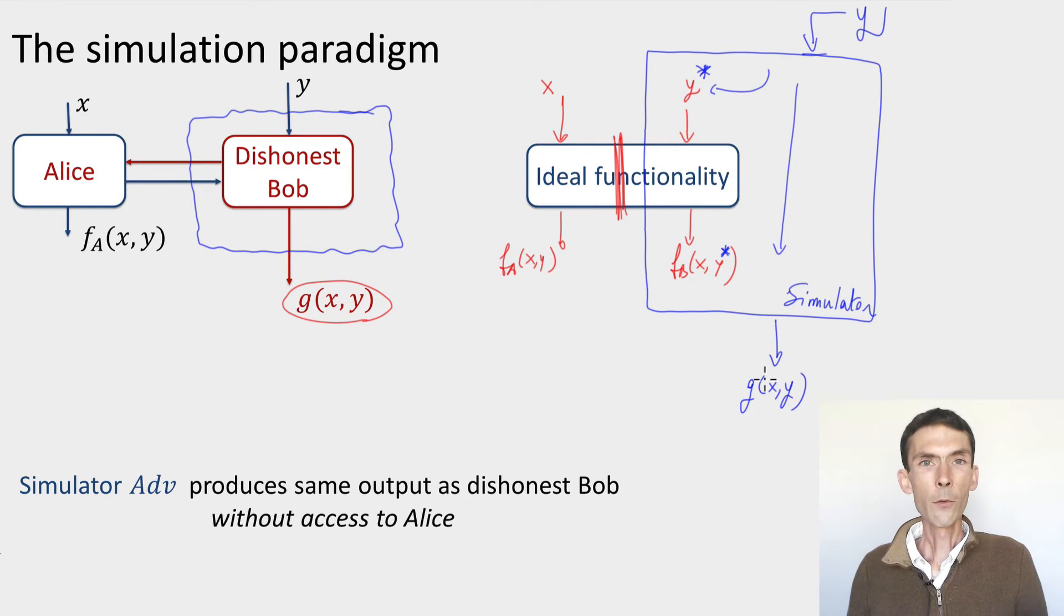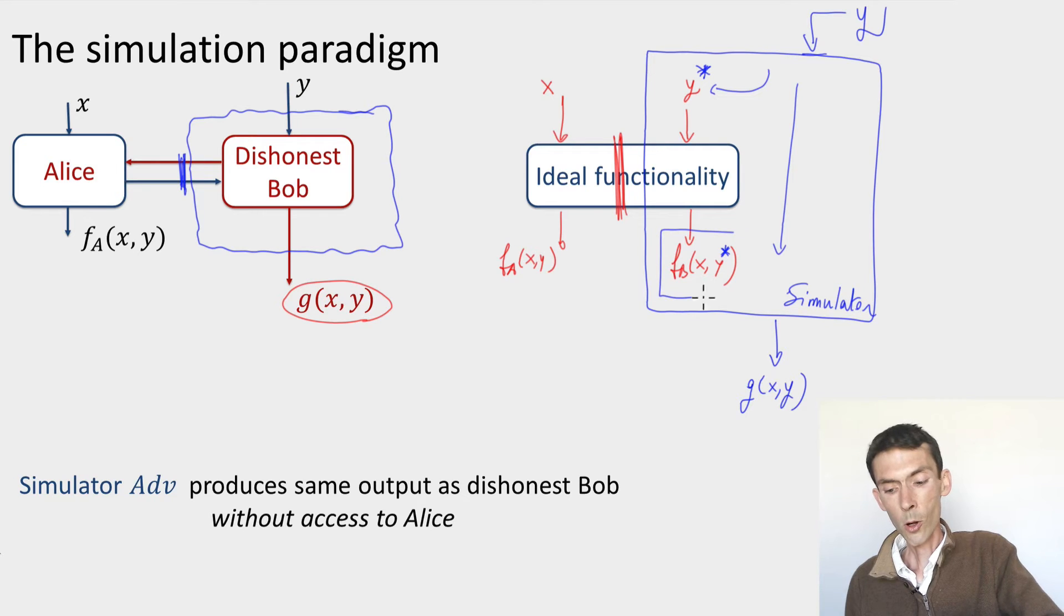Now, if we're able to show that for any dishonest Bob in our protocol, there exists a simulator that interacts with the ideal functionality, and in doing so, produces the exact same result as the dishonest Bob, then we'll say that the protocol is secure against the dishonest Bob. Because Bob could not possibly have learned anything from his interaction with Alice in the real protocol other than the output, because for the simulator, the ideal functionality is giving over to Bob is the ability to compute this output FB of X, Y star. So the only thing Bob can do is lie about his input, which is something that we'll never be able to prevent anyways. So that's the notion of security that we're going to work with. We're going to see some examples. It's a very strong notion of security. It's necessary if you want protocols to be composable. If you want to use a secure protocol and another secure protocol and bundle them together into something that's secure, then you need something called universal composability, and this definition achieves it. Unfortunately, as we're also going to see, it's so strong that it makes a lot of things impossible to achieve, at least with perfect security.